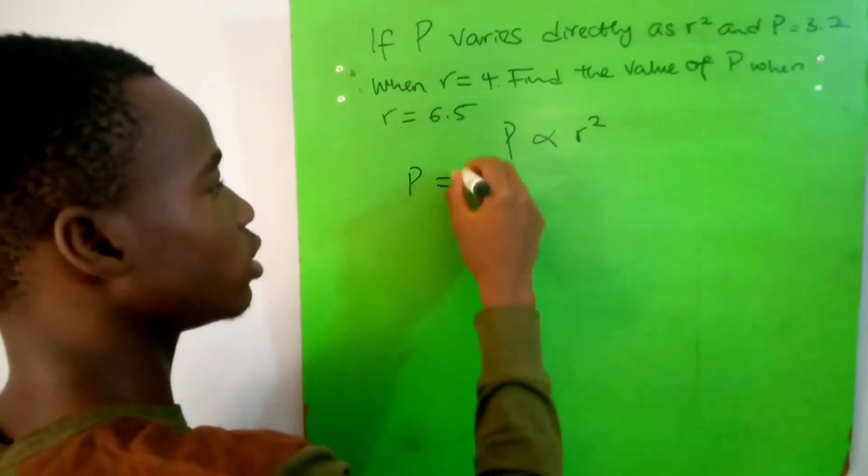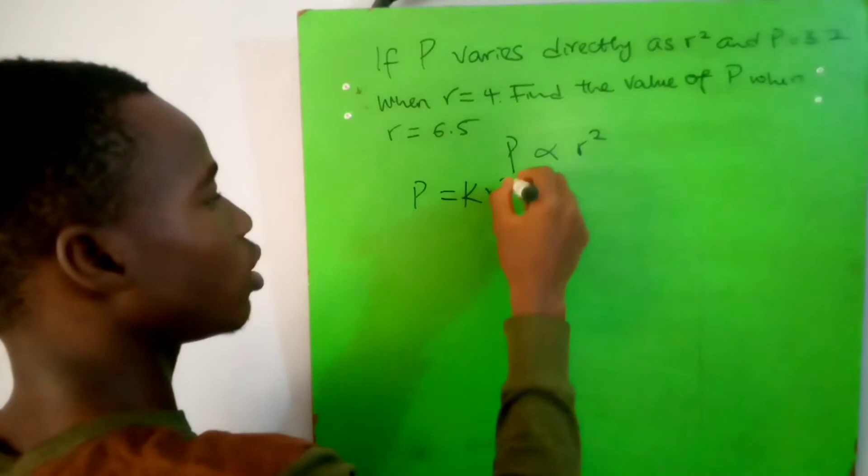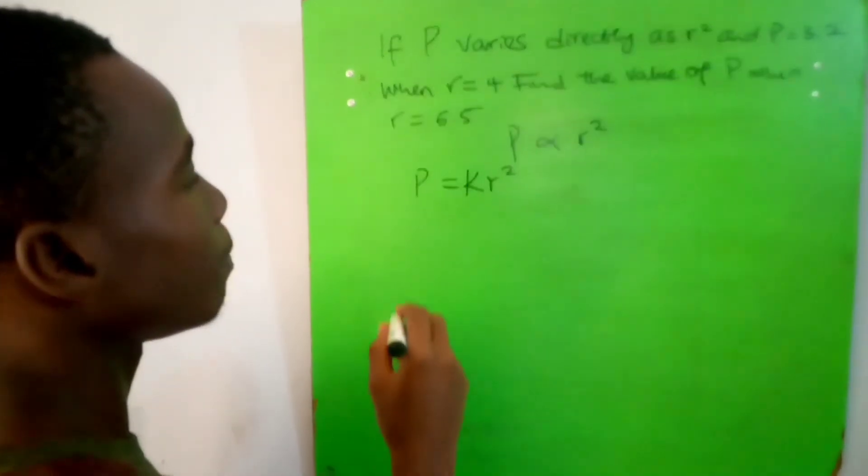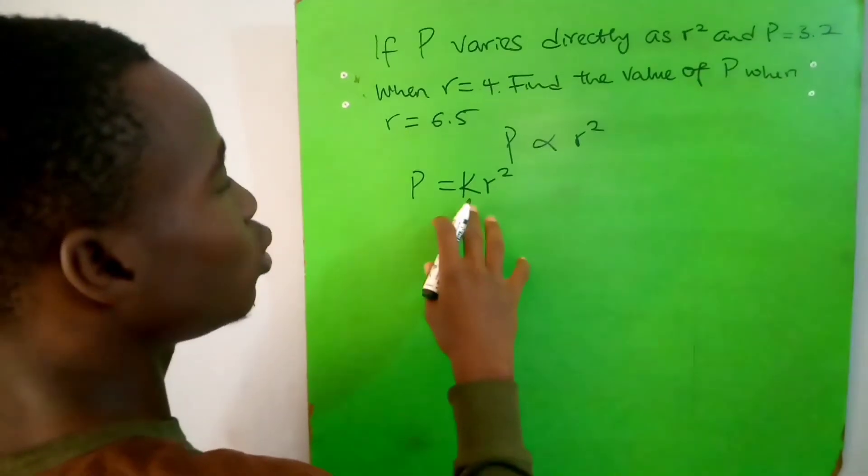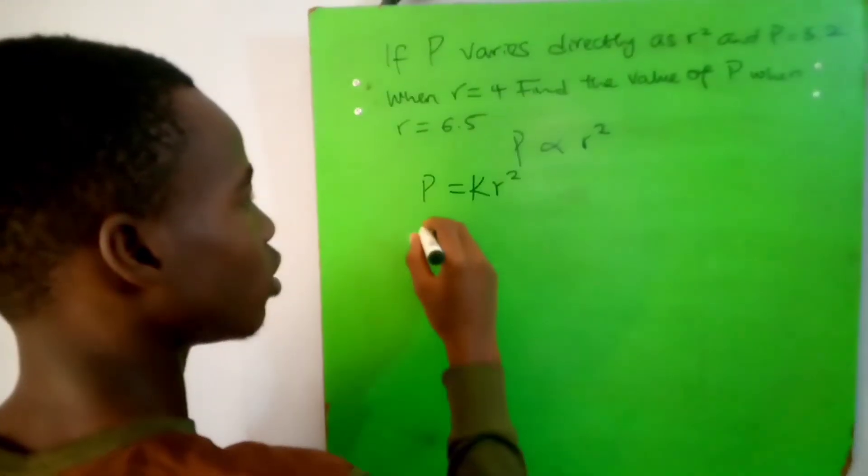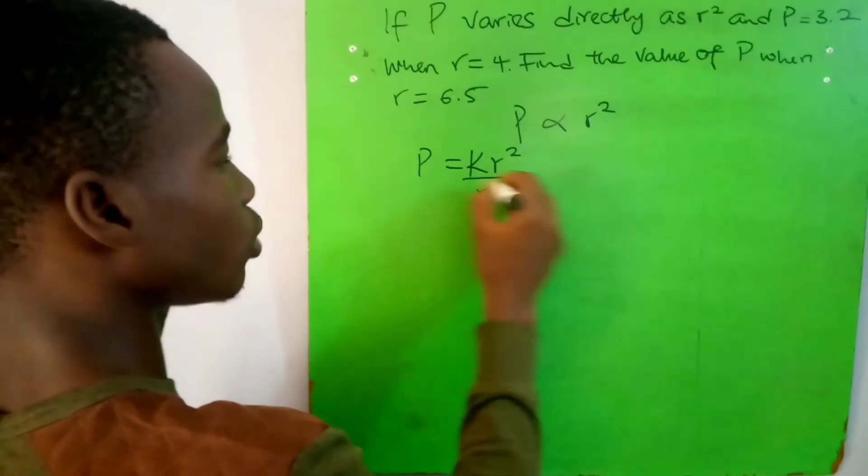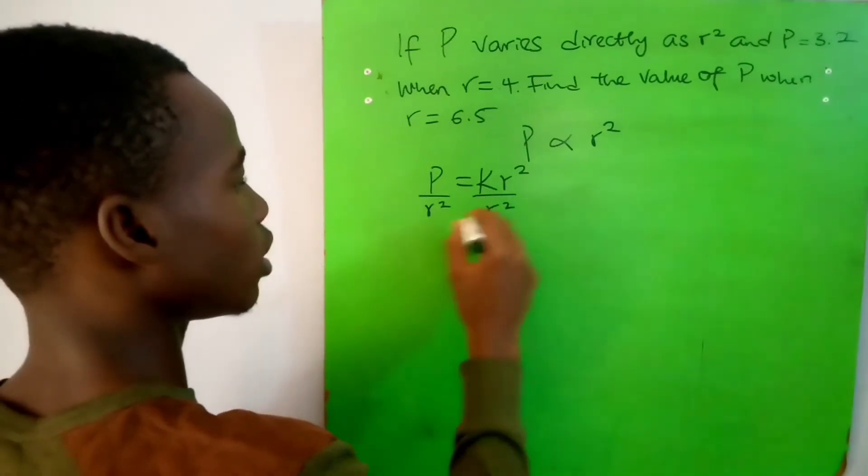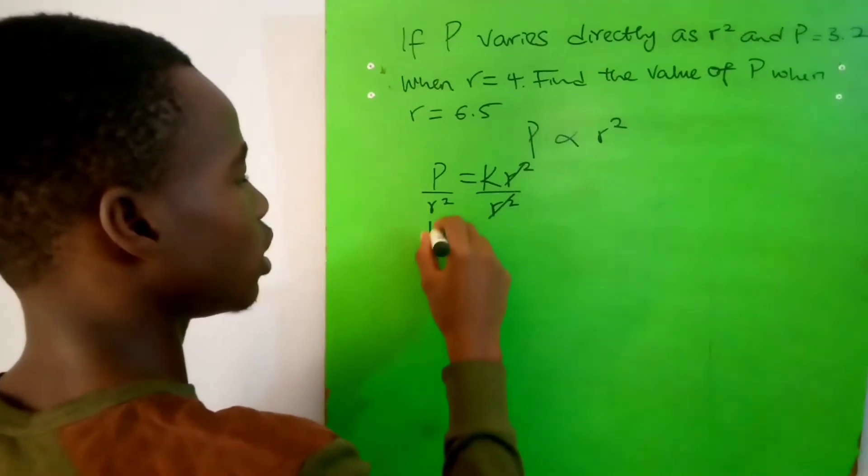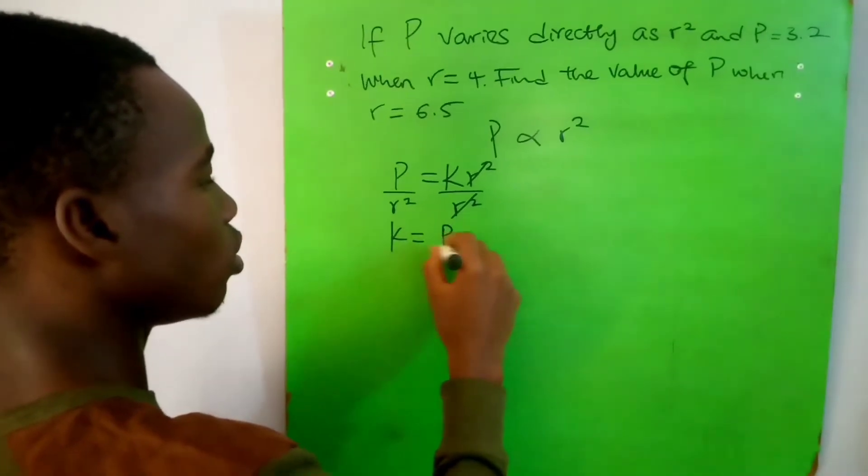So P equals kr squared. Now we have to look for the value of k, the constant. And how do we do that? We divide both sides by r squared, so we cancel out - k becomes P over r squared.